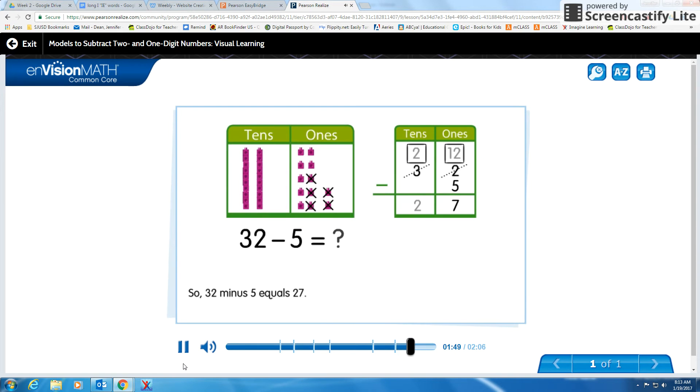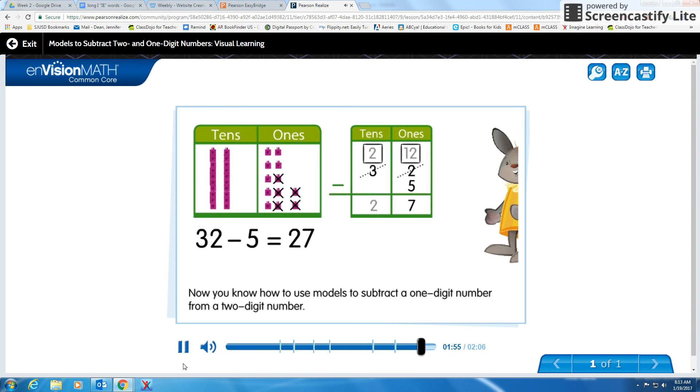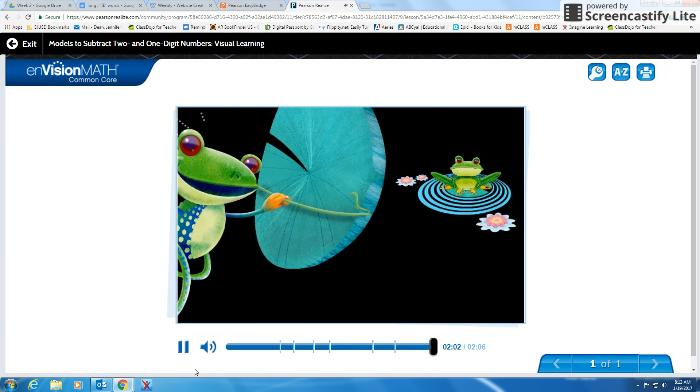So, thirty-two minus five equals twenty-seven. Now you know how to use models to subtract a one-digit number from a two-digit number.